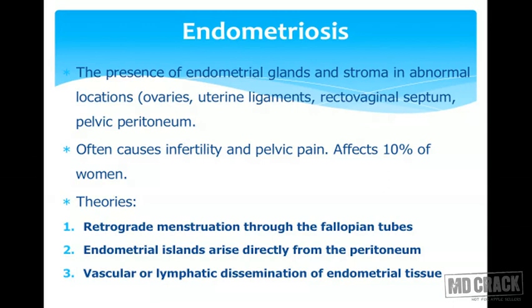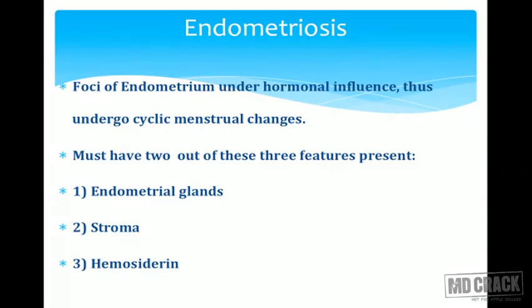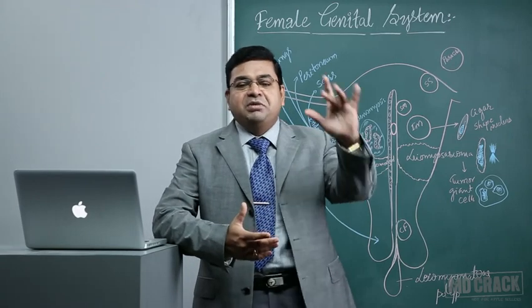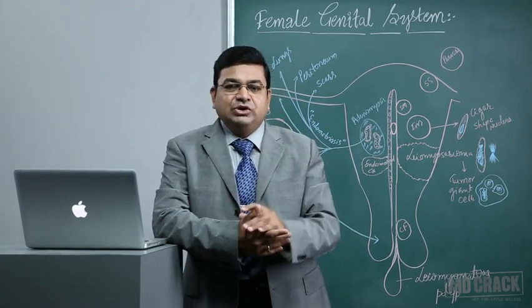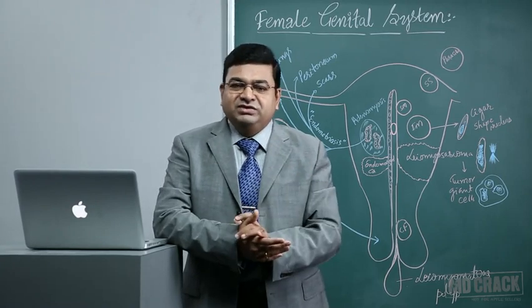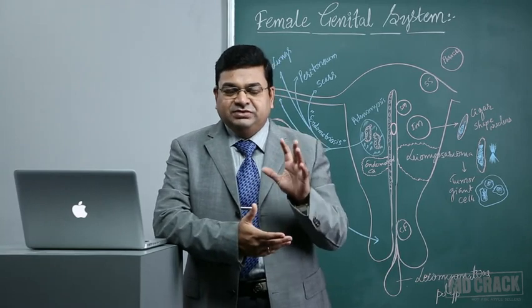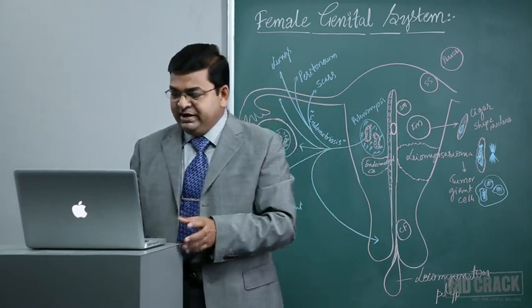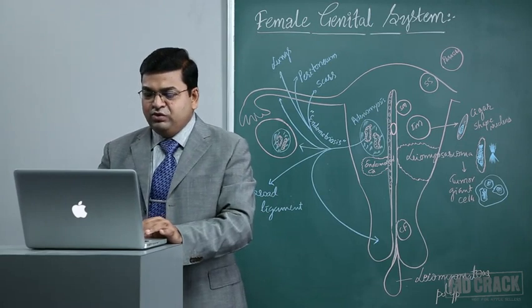Endometriosis affects around 10 percent of women. The ectopic endometrial foci show cyclic menstrual changes under hormonal influence, bleeding at the time of menses. The pathological criteria require at least two of the following three features: endometrial glands, endometrial stroma, and hemosiderin-laden macrophages. Most of the time we see glands and stroma; hemosiderin-laden macrophages are seen less commonly.